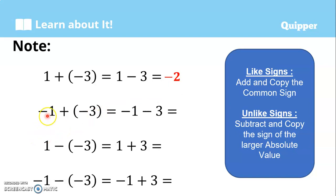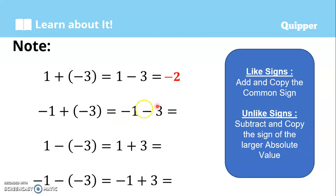For negative 1 plus negative 3: a positive and negative sign side by side becomes a minus sign, so this becomes negative 1 minus 3. They have like signs, so we add and copy the common sign: 1 plus 3 is 4, the common sign is negative, so the answer is negative 4.